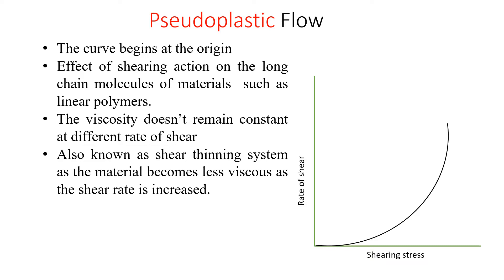Pseudo plastic flow is typically observed in polymers present in solution form, whereas the plastic system consists of flocculated particles in suspension. Many pharmaceutical products including liquid dispersions of natural and synthetic gums like tragacanth, sodium alginate, methyl cellulose, and sodium CMC exhibit pseudo plastic flow. As you can see in this rheogram on the right-hand side, this is a typical behavior of a pseudo plastic material — it generally begins at the origin.